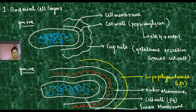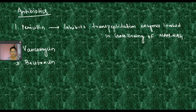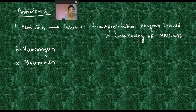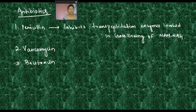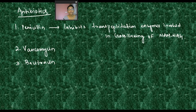The cell wall is a very essential part for the synthesis, growth, and reproduction of bacteria. If we give antibiotics that inhibit cell wall synthesis, the bacteria cannot survive. Common types of antibiotics targeting the cell wall are penicillin, vancomycin, and bacitracin.